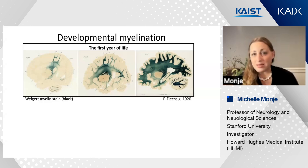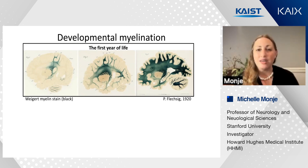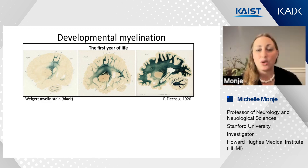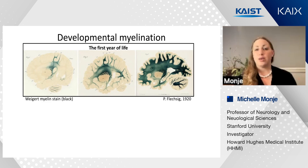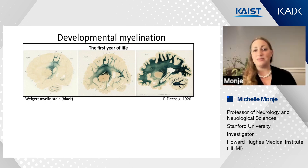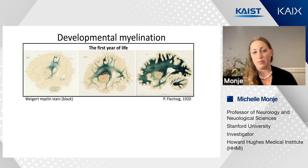First, around three months of age, babies can bring their hands together and keep their head up. By about six months of age, they can sit as myelination progresses down the thoracic cord. And then by the time myelination reaches the lumbosacral cord around 12 months of age, humans often can walk.